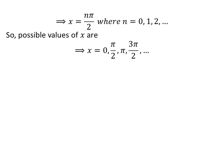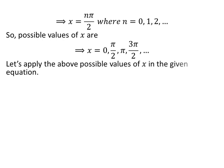So the possible values of x are 0, half of pi, pi, 3 times half of pi, and so on. Let us apply these possible values of x in our given equation: cosine of x minus sine of x is equal to 1.